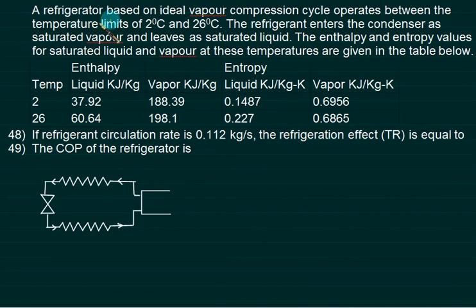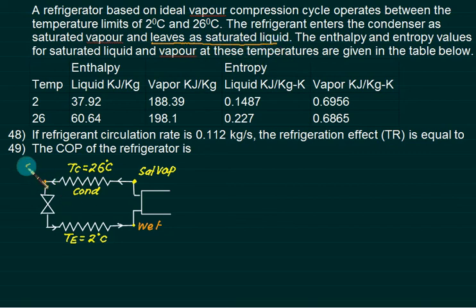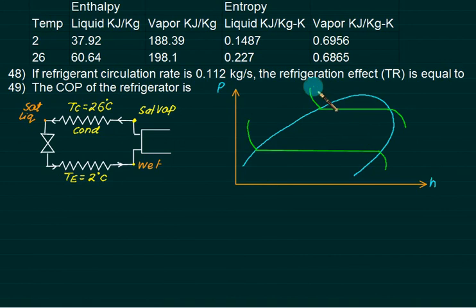A refrigerator based on ideal vapor compression cycle operates between 2 degrees and 26 degrees. Condenser temperature is 26. The refrigerant enters the condenser as saturated vapor at this point, and leaves as saturated liquid. This is a pressure versus enthalpy graph. This is constant condenser temperature and this is evaporator. This represents 2 degrees Celsius and this represents 26 degrees Celsius.